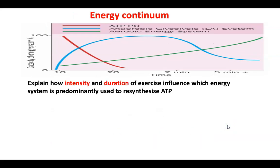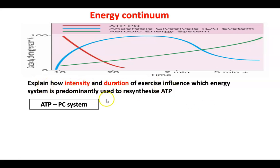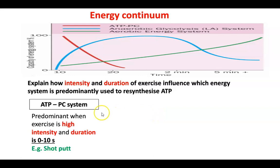To explain how intensity and duration influence which energy system is predominantly used to resynthesize ATP: the ATP-PC system is predominant when the intensity is high and the duration is 0 to 10 seconds — for example, a shot put or a 100m sprint. The glycolytic system is predominant when exercise intensity is high and the duration is between 10 seconds and 3 minutes — for example, a 400m or 800m run.